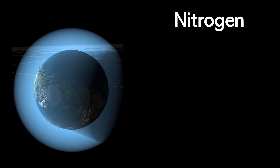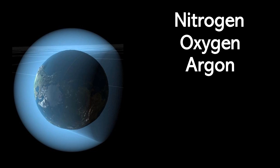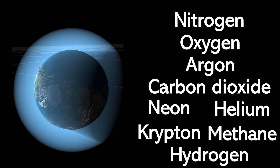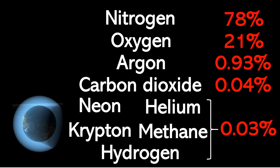Our atmosphere is made up of different gases — namely nitrogen, oxygen, argon, carbon dioxide, neon, helium, krypton, methane, and hydrogen. But most of our atmosphere — 78% — is nitrogen, and 21% is oxygen, so that's almost 99%. Only 1% is given to the other different gases found on our planet.